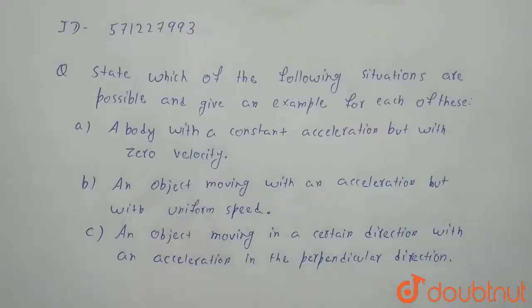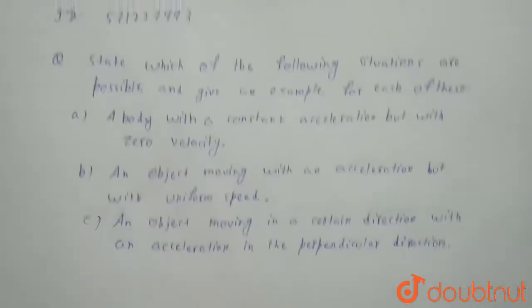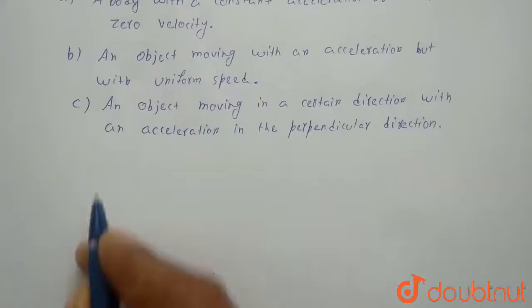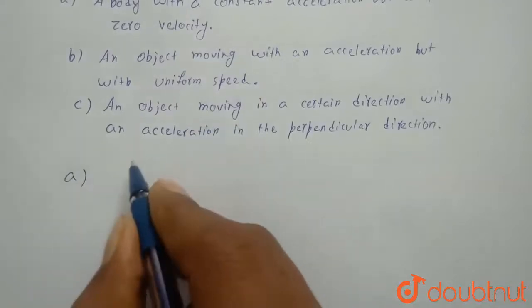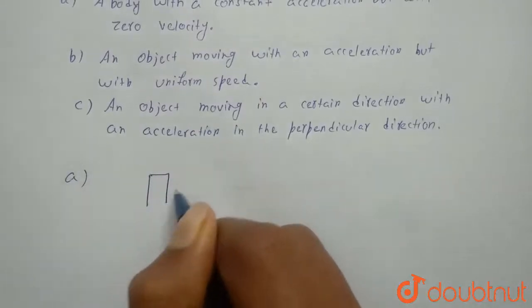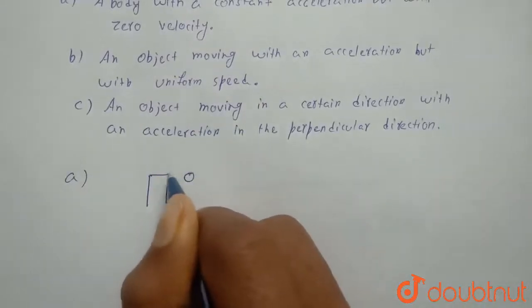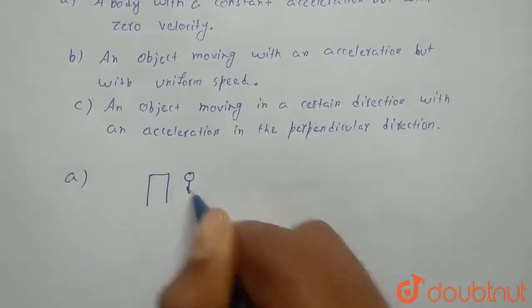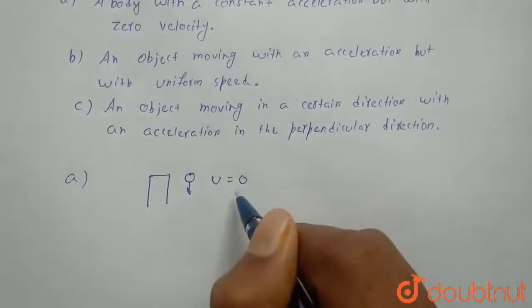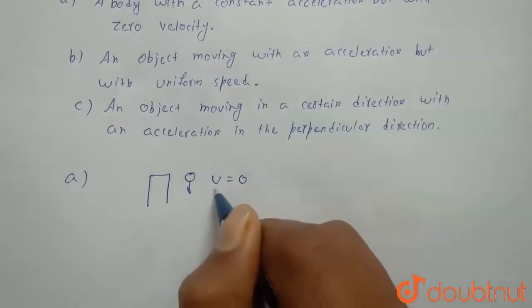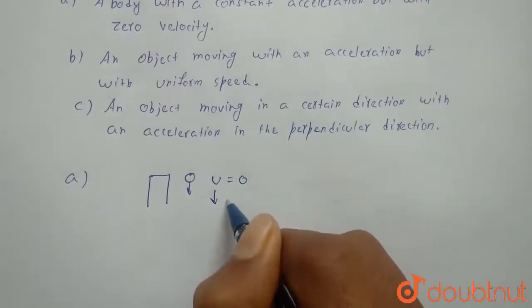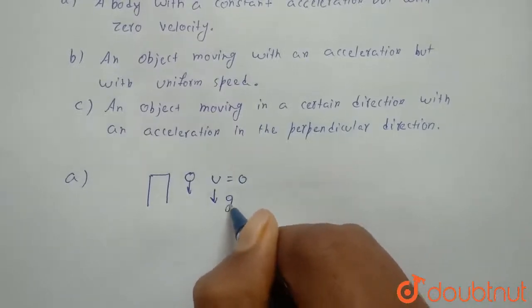In this case, suppose a ball is being dropped from the top of a tower. Initially its u is zero as the ball is being dropped, but acceleration due to gravity is acting constantly.